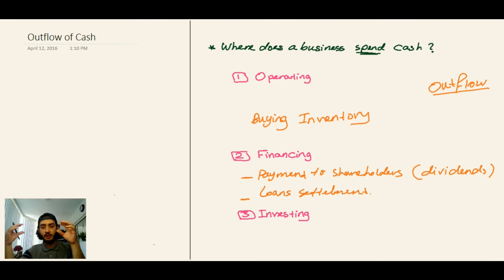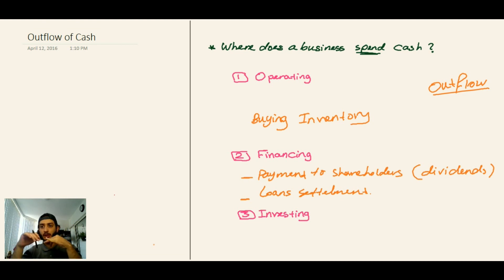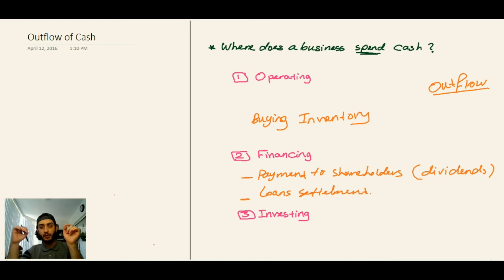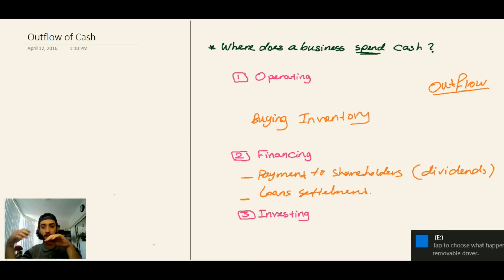An investing activity for outflow will be any purchase of assets for the company. So if we are buying machines, equipment, or cars, all of these are investing activities — buying assets. Of course, we have to emphasize that this is other than products or inventory, because if you are buying inventory it will be an operating activity.